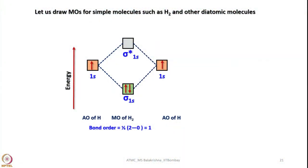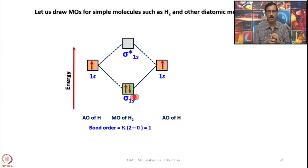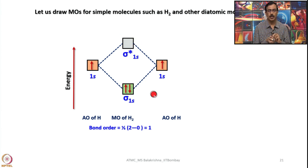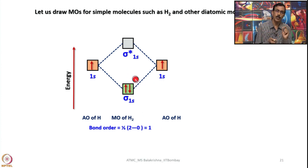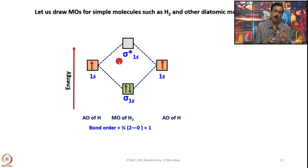Let us draw the MO diagram for H2. Two hydrogen atoms each come with one 1s electron, and they are similar in energy. When they combine, they generate two molecular orbitals — one bonding and one antibonding. The two electrons occupy the bonding orbital, and the antibonding is empty. Bond order = (2 - 0) / 2 = 1, so there is one bond between H and H. Molecular orbital theory very nicely predicts the bond multiplicity and how stable the molecule is.